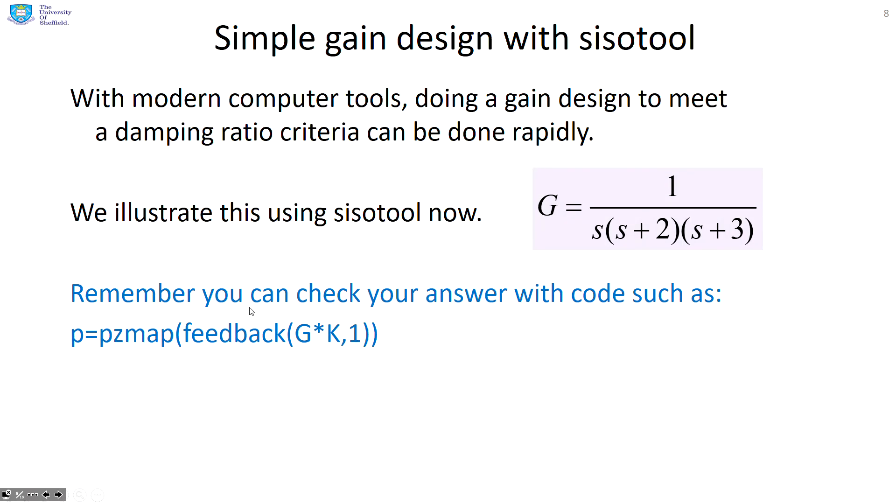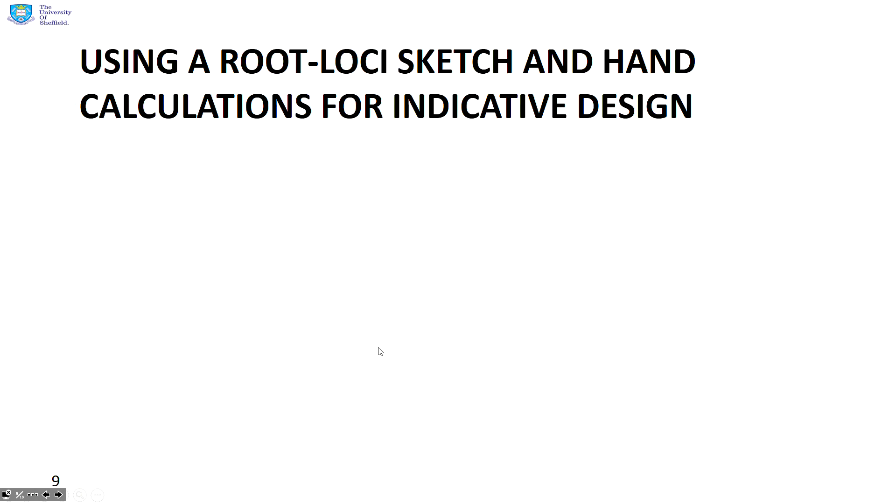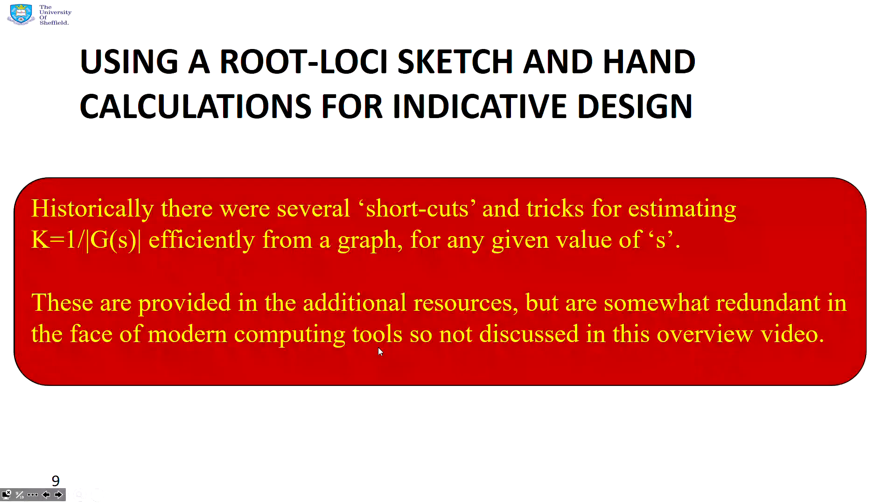And remember, if you want to go back to MATLAB itself, you can always check the exact closed loop poles with commands like this. Now, hand calculations. Historically, there were several shortcuts and tricks for estimating the value of K using one over the modulus of G of S efficiently from a graph for any given value of S, any target pole position. But I'm not going to do that here because it is still a little bit tedious, perhaps slightly redundant given we now have modern computing. But it is on the website if you want to go and look and see how to do it.